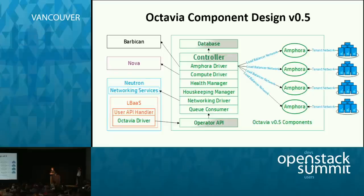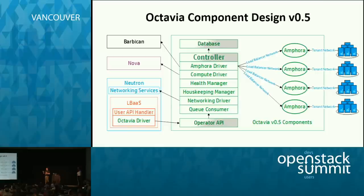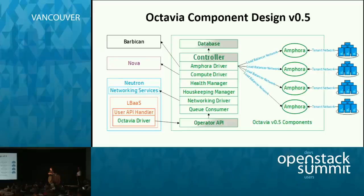Even today, we have two different Amphora drivers available: one based on an SSH model and one based around a REST API model. The Amphora — in the current implementation a service VM — is given an abstracted name because we also want to support containers and technologies like Docker as a possibility for hosting Amphora content. The HAProxy in this implementation actually lives inside that Amphora, and the controller interacts with it through the driver via either the SSH or REST API driver.